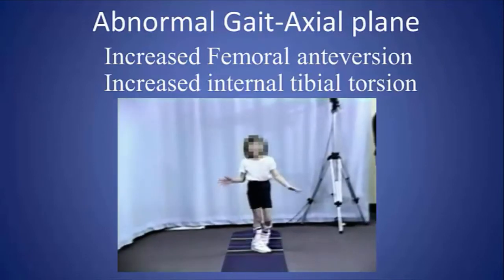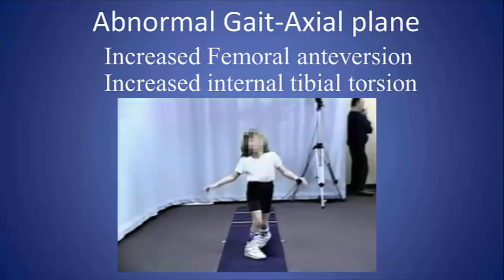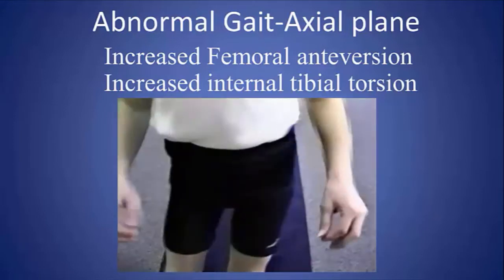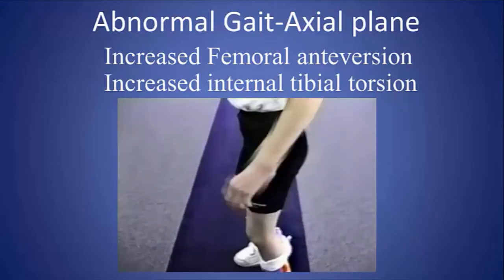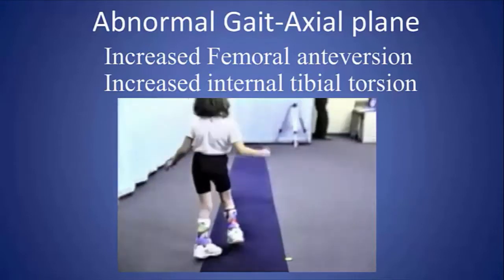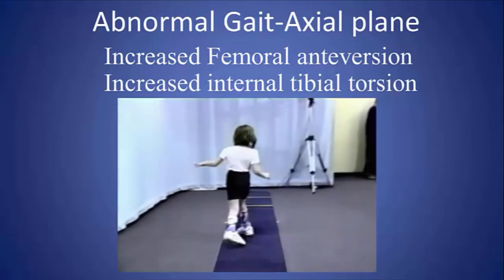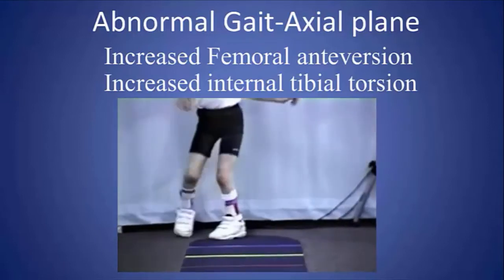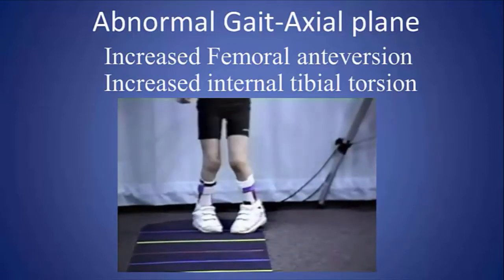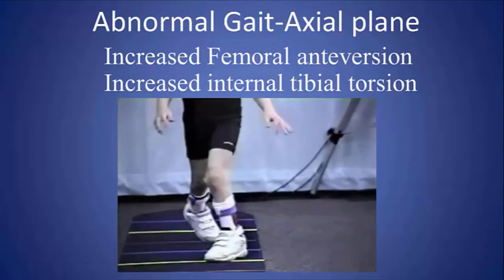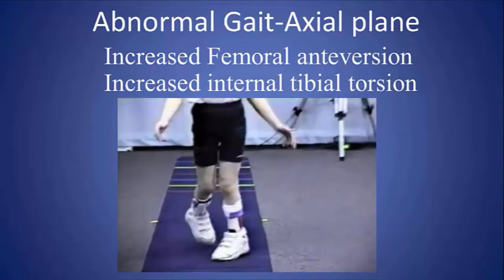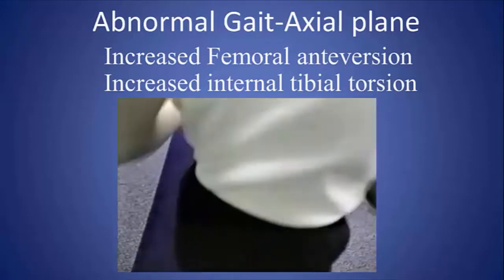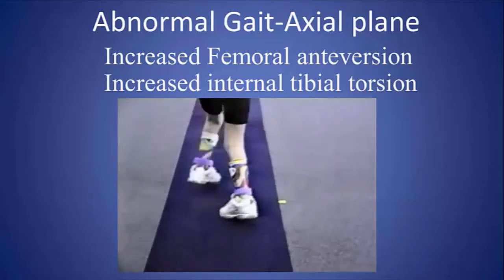We do see abnormalities. Here, for example, is a girl who we saw earlier who has fixed abnormalities in the rotational alignment of her lower extremities. You can see that her patellae are markedly turned in as a result of her inability to externally rotate, due to increased femoral anteversion.